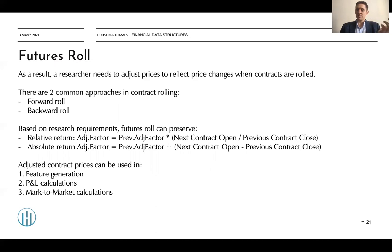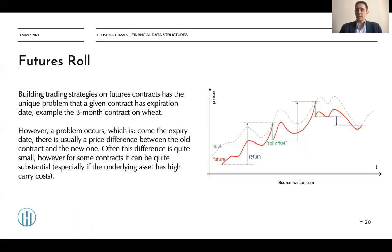This procedure is called the futures roll. We need to calculate the adjustment factor. When a contract expires, we know the close price of the expiring contract, and when the next contract becomes active, we know the open price of the new contract. We can find either the price difference between the open of the new contract and the close of the previous contract, or we can find the percent change between these two. This is called the adjustment factor.